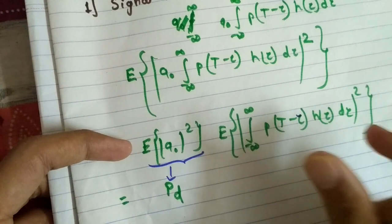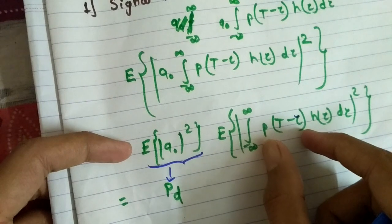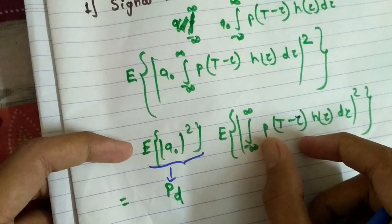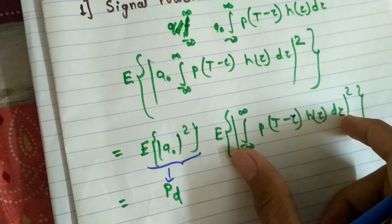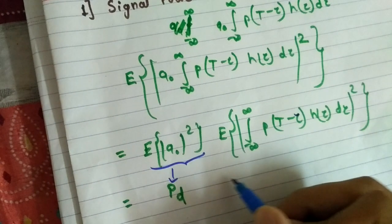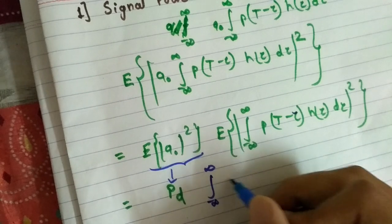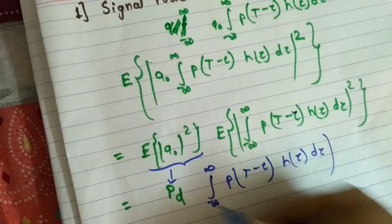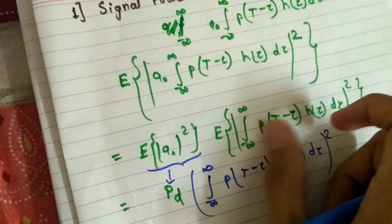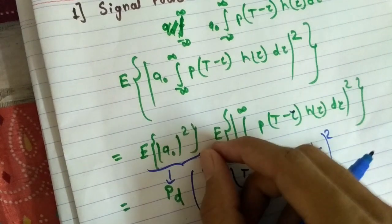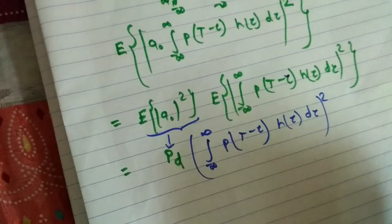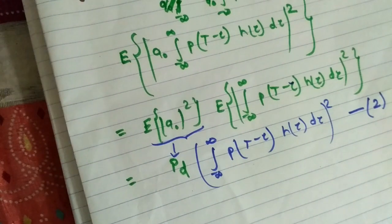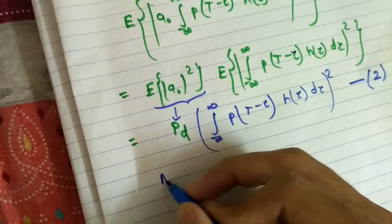These are deterministic signals — deterministic means they can be represented mathematically. h(tau) is also a deterministic signal. So the expected value of this is nothing but the integral from minus infinity to infinity; the expectation operator E will disappear. We can write simply P_d multiplied by this, because this is a deterministic signal. The expected value of a deterministic signal is nothing but the signal itself. So at the end we are left with this — this is the signal power.